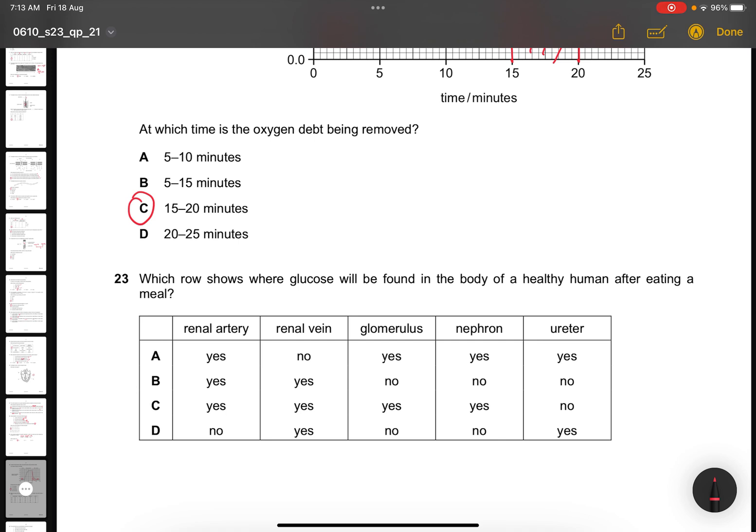Question 23. Which row shows where glucose will be found in the body of a healthy human after eating a meal? We're basically asking where is the glucose found. Renal means kidney. Do note renal is the kidney. And then glomerulus, nephron, and ureter is all under inside the filtration system. There will be glucose in the renal artery. So yes, yes, yes. This will be rejected already. Renal vein, there will be also. This will be out.